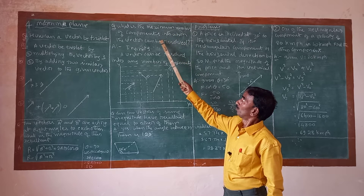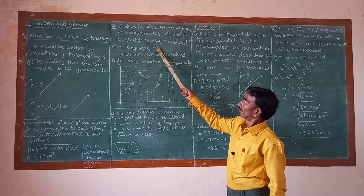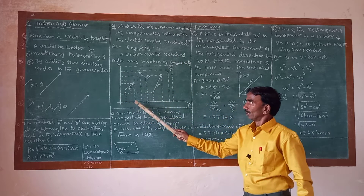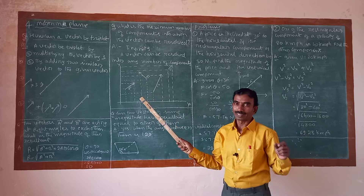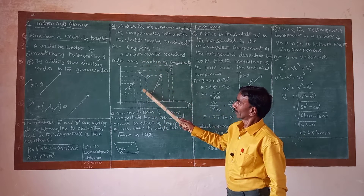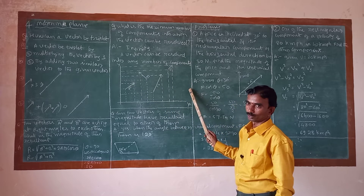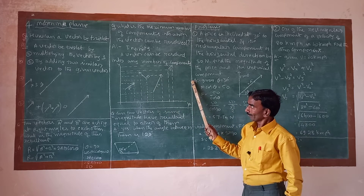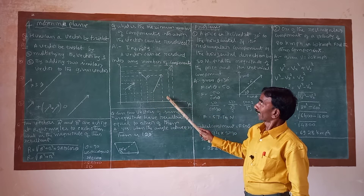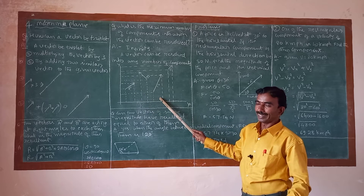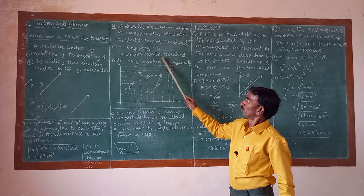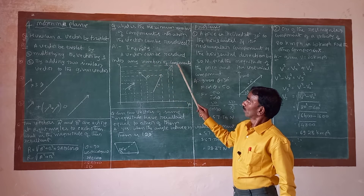What is the maximum number of components into which a vector can be resolved? A vector can be resolved into any number of components — the answer is infinity.